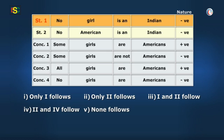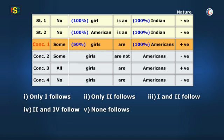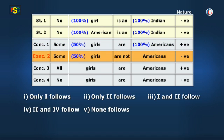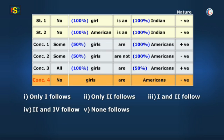In statement one, both subject and predicate are hundred percent, same with statement two. Now in conclusion one, subject and predicate are both fifty percent. In conclusion two they are fifty percent and hundred percent respectively. In conclusion three they are hundred percent and fifty percent, and in the last one both are hundred percent.